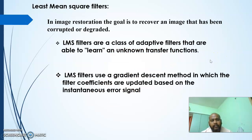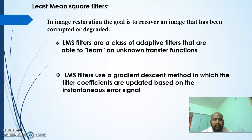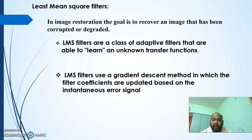The Least Mean Square filter is used in the image restoration part. In restoration, we require restoration filters to get the restored image. The input given to the Least Mean Square filter will be a corrupted or degraded image. The goal is to recover an image that has been corrupted or degraded, and this Least Mean Square filter is used for that purpose.